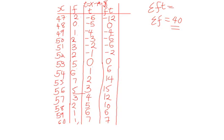Now, let's get the sigma FT. Negative 12 plus 0 plus negative 4 plus negative 6 plus negative 2, then plus 0 plus 6, 14, 15, you add 12, you add 10, 6, 7, and sigma FT will be equal to 40, if you add all these values of FT.